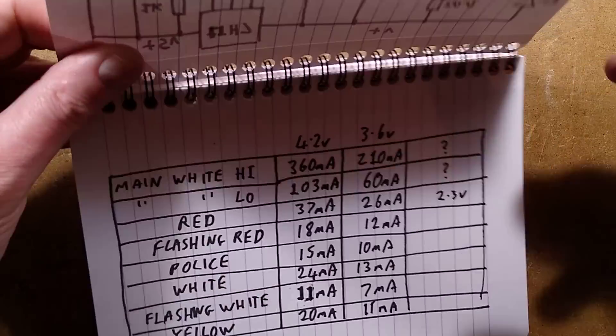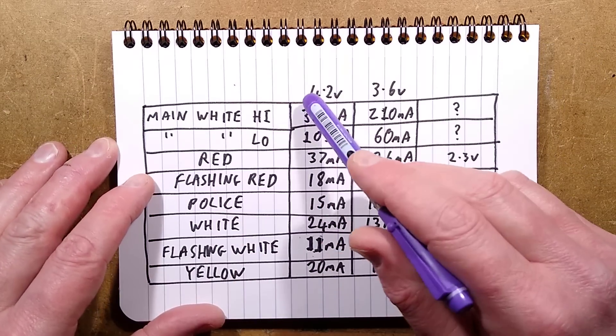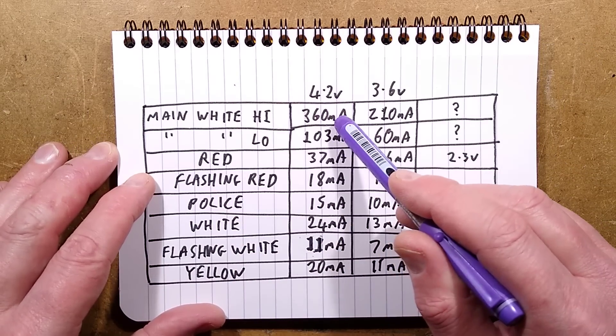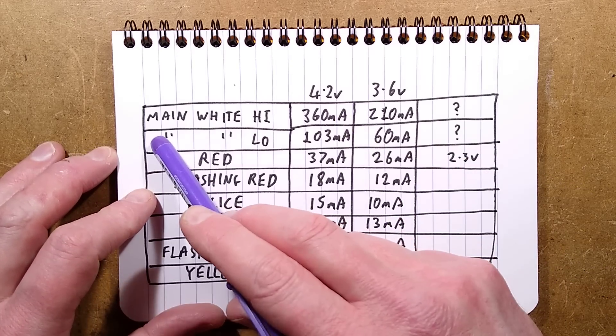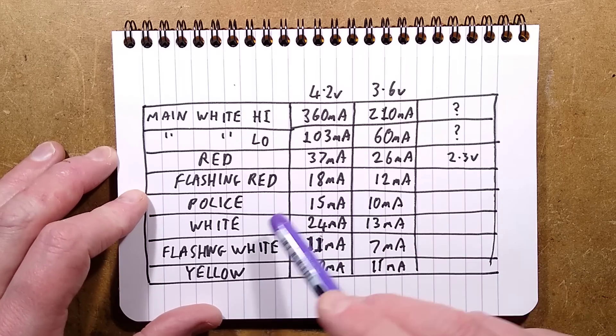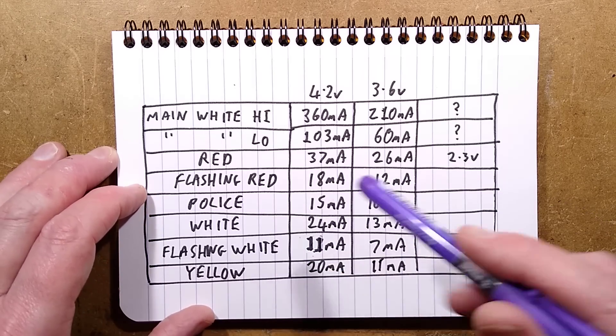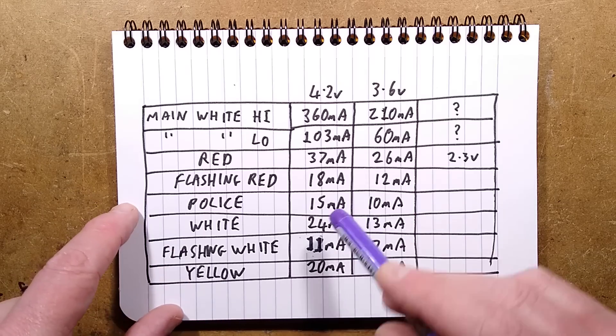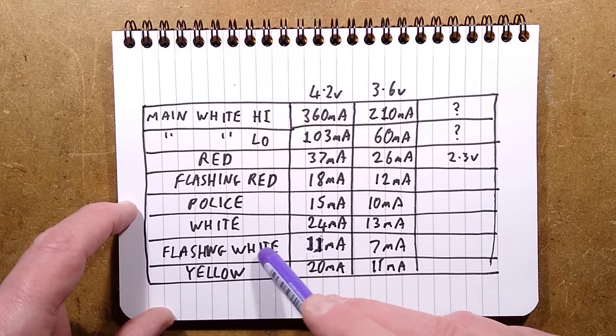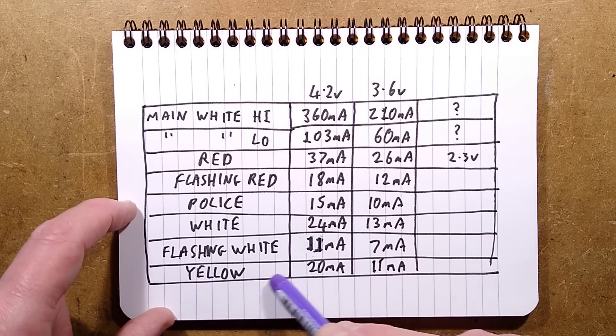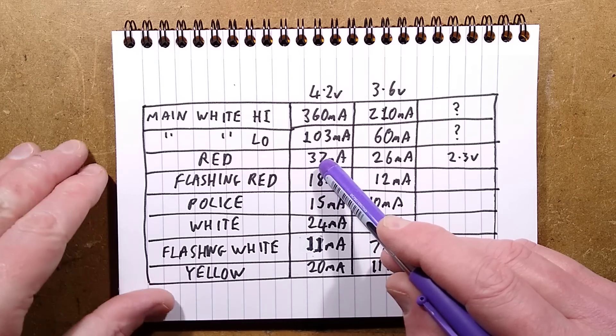Currents: Main white high at 4.2 volts is 360 milliamps of which part of that will be the 26 milliamps base current. At low, it's 103 milliamps. Red, 37 milliamps. Flashing red, 18 milliamps, so that's presumably just a 50% duty cycle. The police mode, alternating batteries and forwards, 15 milliamps. White, 24 milliamps, which is quite good. That's okay for that LED. Flashing white, 11 milliamps. And yellow is 20 milliamps. The red seems to take a lot more current at 37 milliamps because it's got that lower forward voltage.